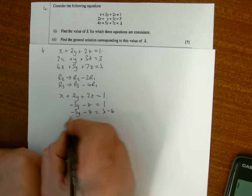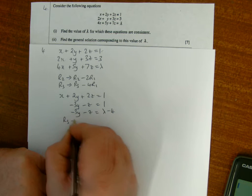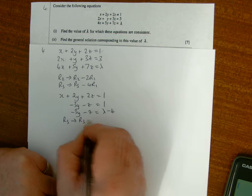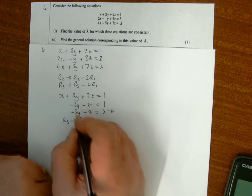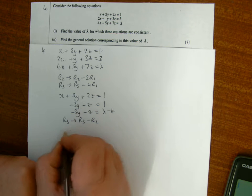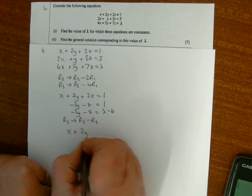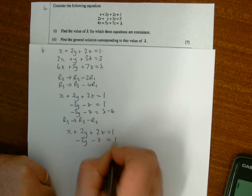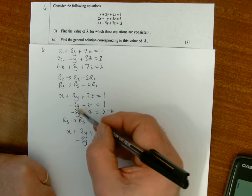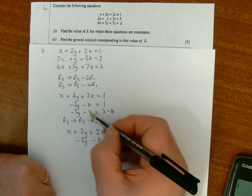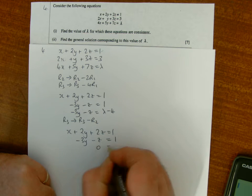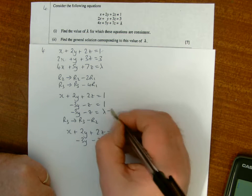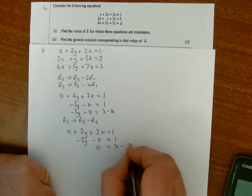Then to get a zero here, row 3 is going to become row 3 minus row 2. I'm just subtracting them to get a zero entry there. So the first two rows remain the same, and then subtracting them: minus 3 minus minus 3 is zero, minus z minus minus z is zero, and I got lambda minus 4 minus 1, which is lambda minus 5.